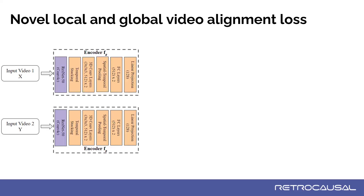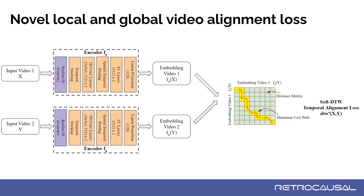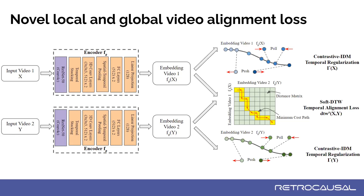We sample two videos and pass them through an encoder to get frame-wise embeddings. We use a differentiable version of discriminative time-warping, soft DTW, to find the alignment discrepancy between the two sequences and minimize it. Unfortunately, only optimizing for soft DTW leads to trivial solutions. That's why we present a temporal regularization term, namely contrastive inverse difference moment, or contrastive IDM. Contrastive IDM optimizes for temporally disentangled representations — temporally nearby frames are projected to nearby regions in the embedding space and vice versa. This avoids trivial solutions and improves generalization.